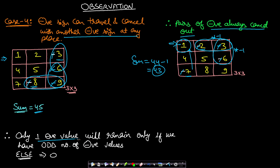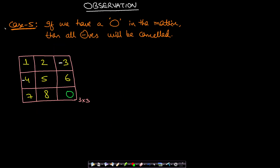Only one negative value will remain if we have an odd number of negative values. If we have an even number of negatives, all pairs cancel out. So negatives only have any net impact when their count is odd — we can always remove all pairs of negative values.